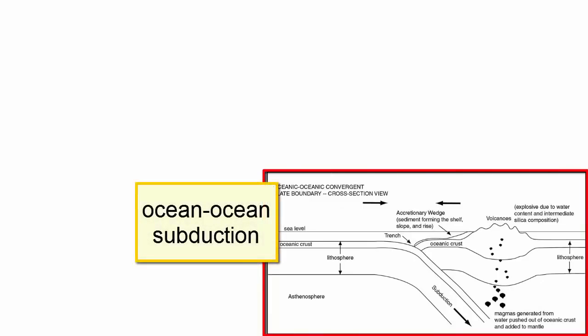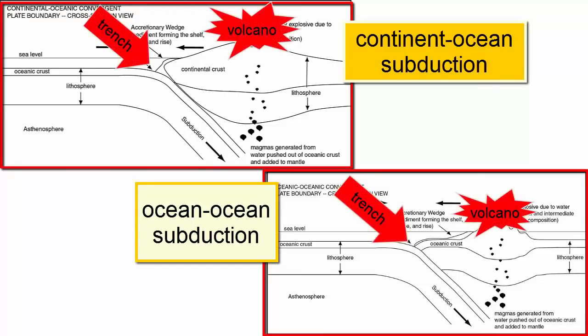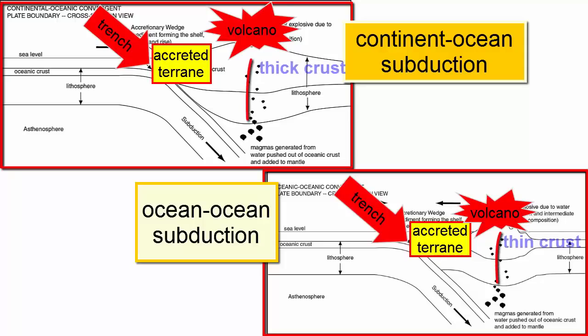Ocean-ocean subduction zones produce the same types of features as continental-ocean subduction zones: trenches, volcanoes, and accreted terrain material that forms coastal mountain ranges. The only difference is that the volcanoes erupt through thinner oceanic lithosphere, making them slightly less dangerous. The thicker the lithosphere, the more likely the gas content will increase in the magmas, leading to higher pressures and more explosive volcanoes.